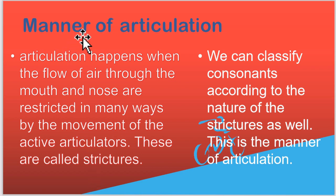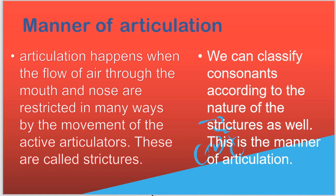Now we look at the manner of articulation. Articulation happens when the flow of air through the mouth and nose is restricted in many ways by the movement of the active articulators. These are called strictures. We can classify consonants according to the nature of the strictures as well — this is the manner of articulation.